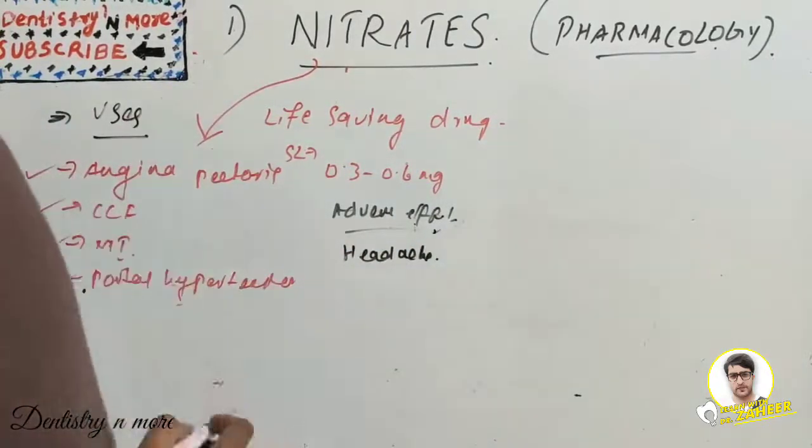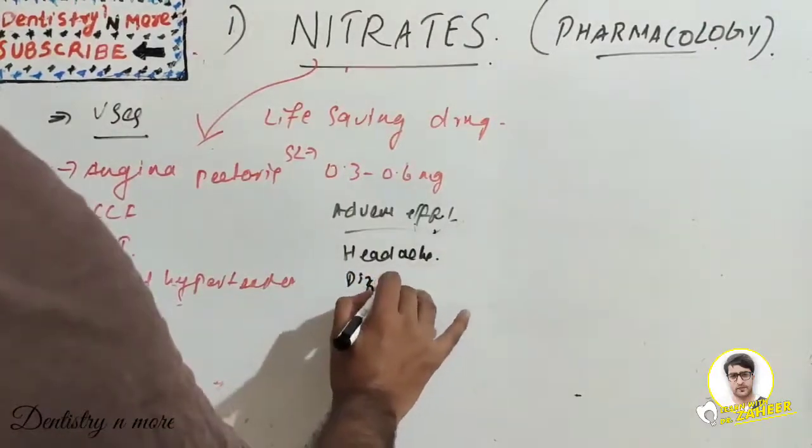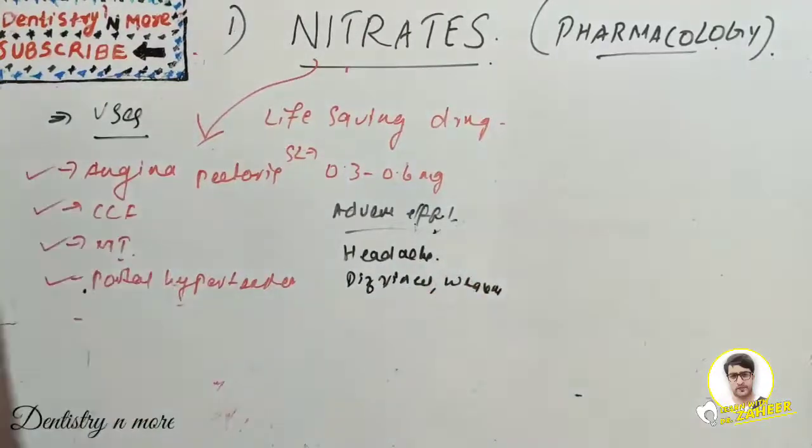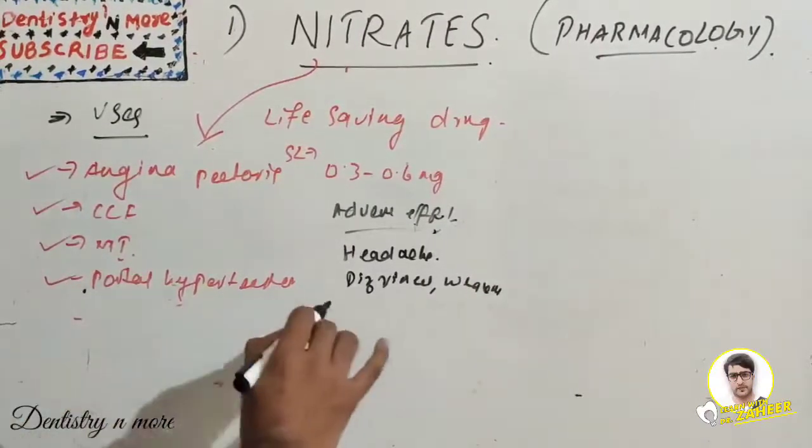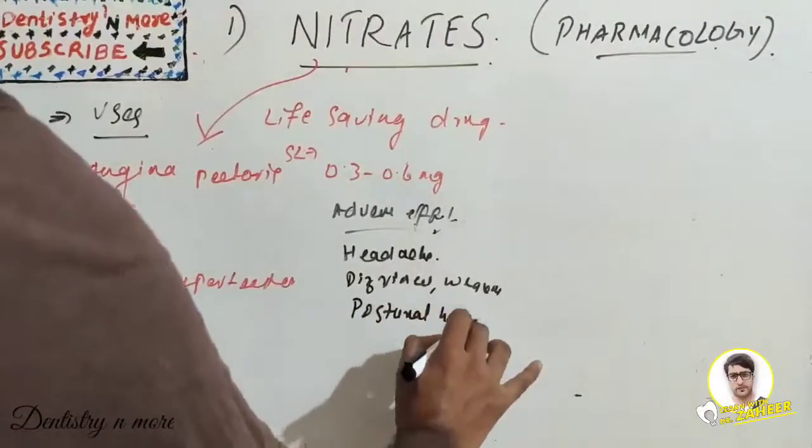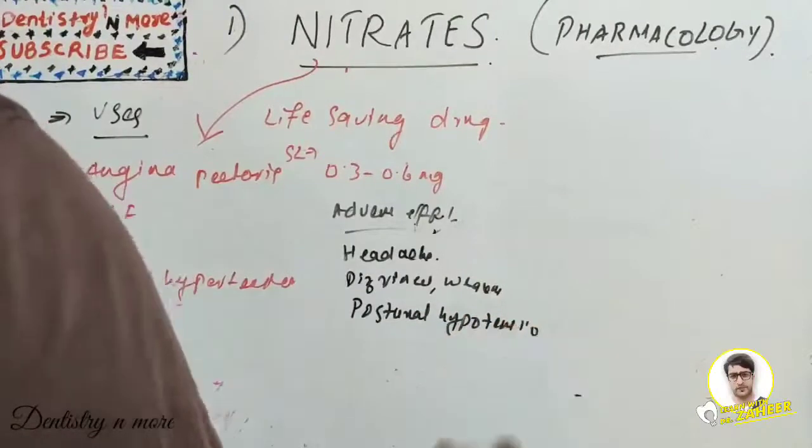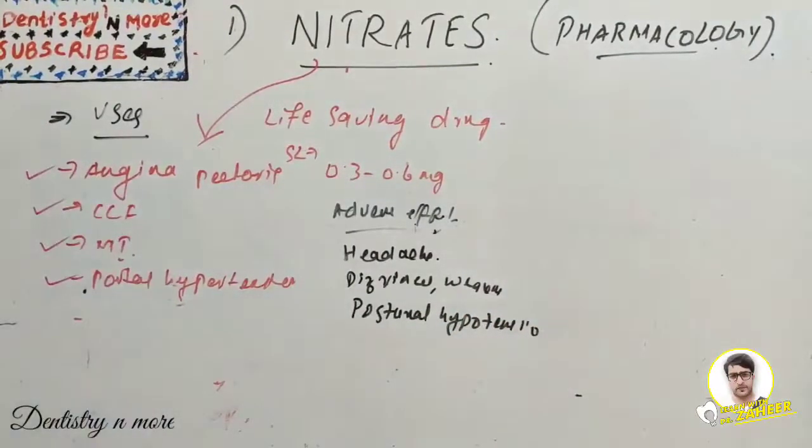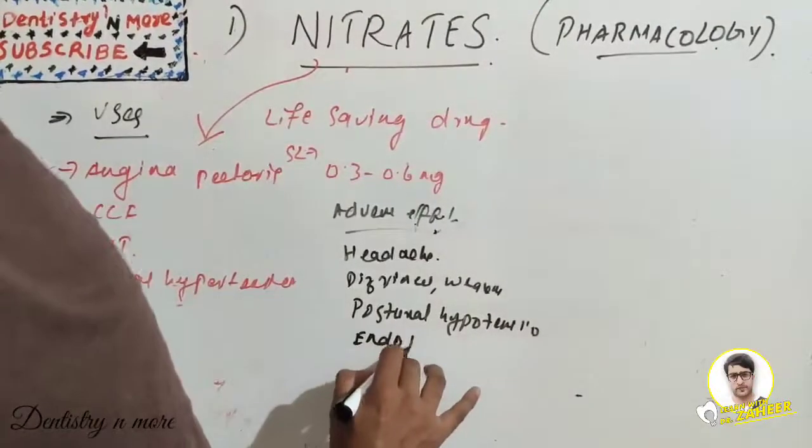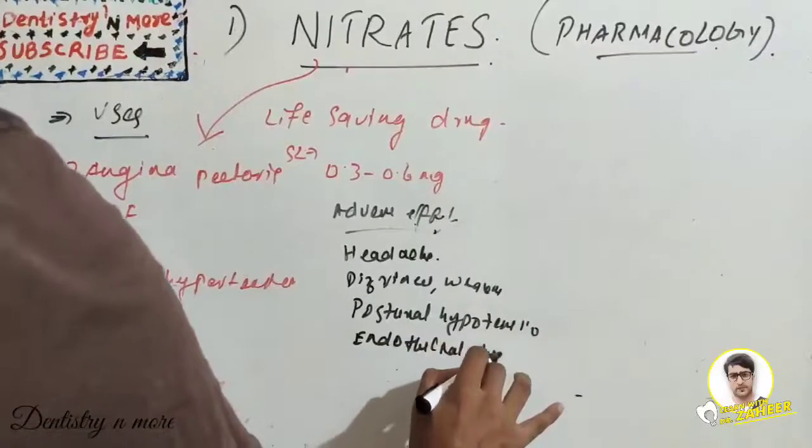Then there will be transient episodes of dizziness and weakness. Other manifestations are associated with postural hypotension. High doses of organic nitrates cause postural hypotension related to high concentration. Prolonged therapy causes endothelial dysfunction with respect to prolonged usage.